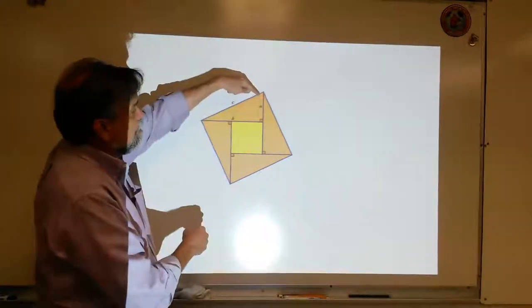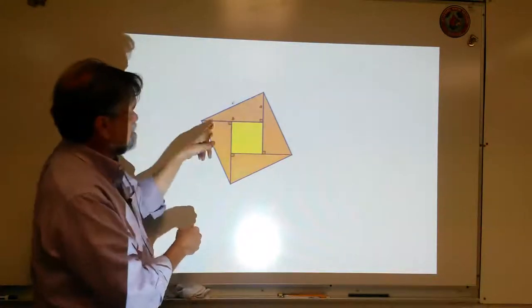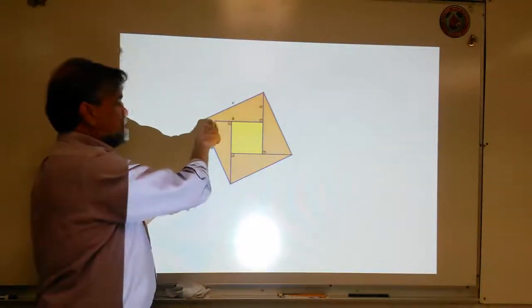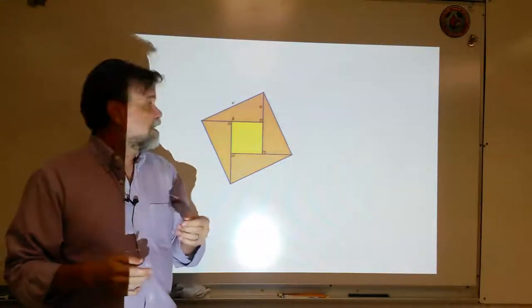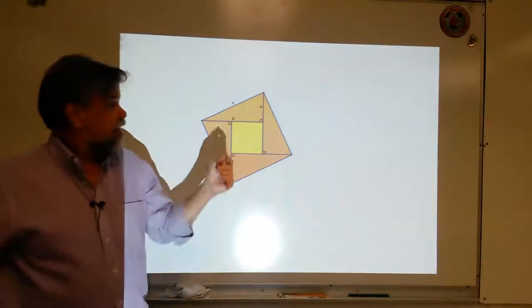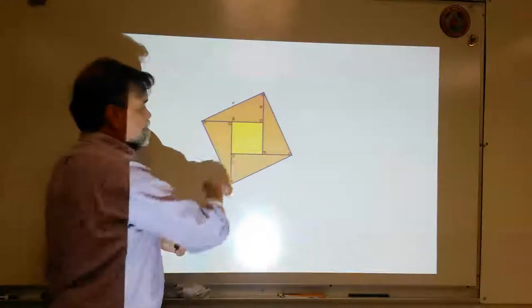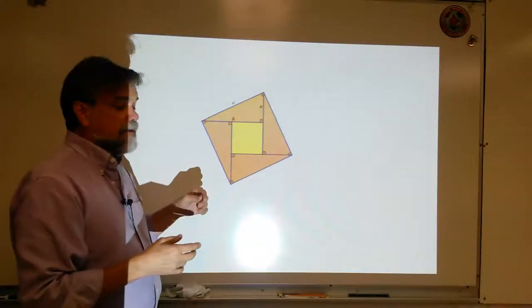So, if they're complementary, this is the same as this. So, that means these two together are complementary and they're going to add up to be 90. So, let's go ahead and put those, there we go. Now the right angles are drawn in there.